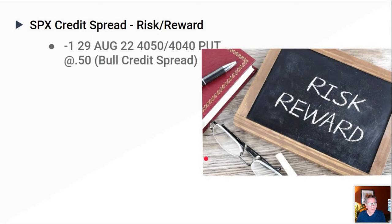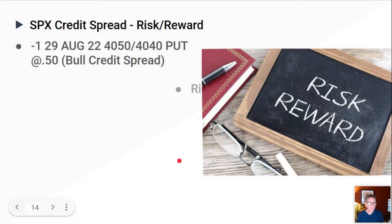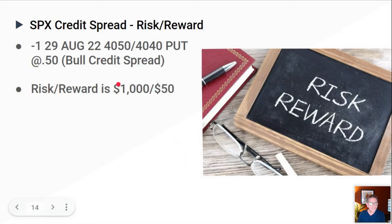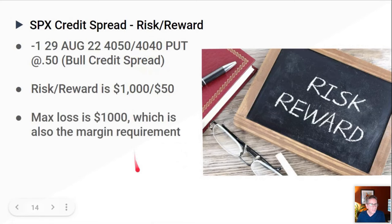Let's talk about risk/reward. A lot of people like to have a better reward than risk, but in this case it's the opposite because it's a high probability trade — you lose some of the risk/reward ratio. For a 10-wide spread (e.g., 4050 minus 4040 = 10), you have to put up $1,000 as margin and receive $50. So you're receiving that $50 and the risk on this trade is $950 because you get that credit. The max loss is $1,000 minus the $50.